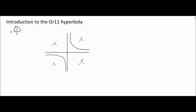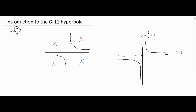We could modify that equation by shifting it vertically. Notice we've got an equation that says y equals 2 over x plus 3. Just like with the parabola, that plus 3 has the effect of moving the hyperbola upwards. Once it has moved upwards, it will look as follows. Notice how the hyperbola has shifted three places upwards.